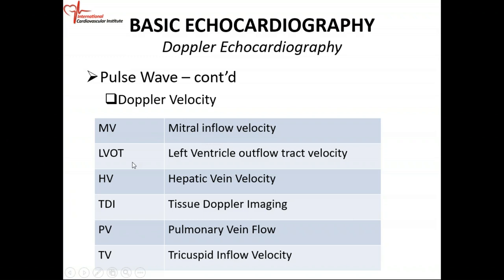We call that the mitral inflow. The left ventricle outflow tract velocity is blood moving from the left ventricle through the outflow tract, across the aortic valve, and into the aorta — we use pulse wave Doppler to measure that as well. Hepatic vein flow: blood flows from the hepatic vein into the inferior vena cava, and that blood flow velocity is measured using pulse wave Doppler.